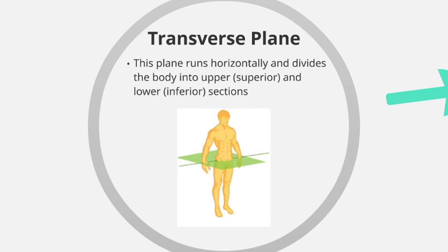Moving on to the transverse plane, this is a plane that runs horizontally and divides the body into upper and lower sections. The upper section is also known as the superior section, and the lower section is referred to as inferior. You can quite clearly see that the transverse plane is running horizontally and creating that top and bottom section.